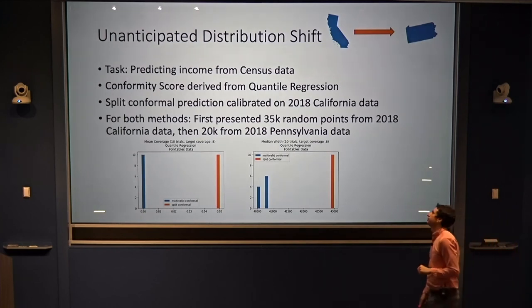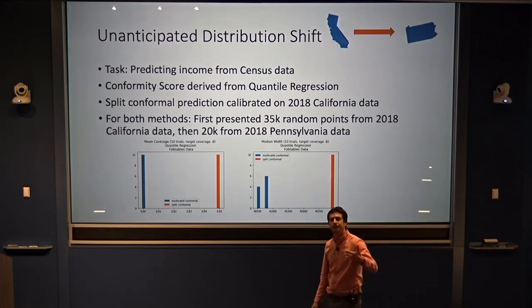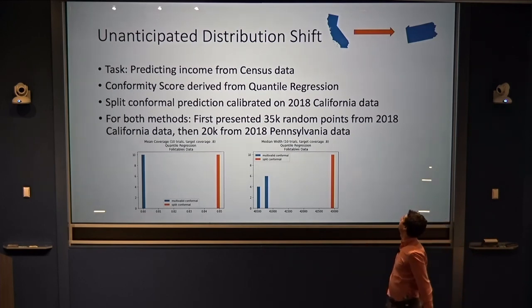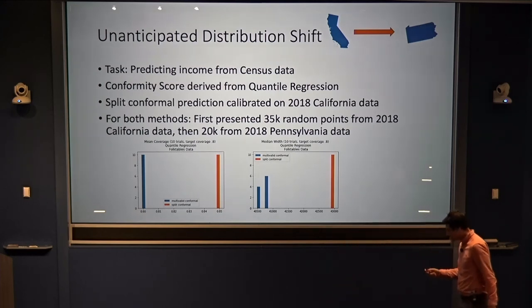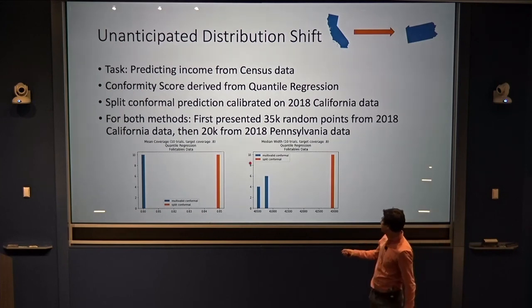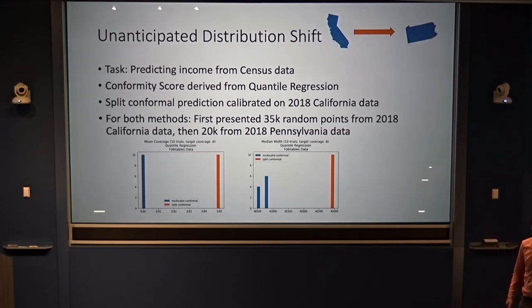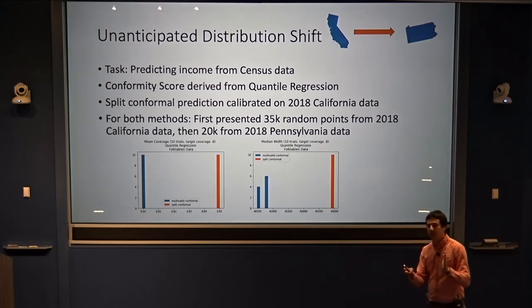How about unanticipated distribution shift? This experiment uses real census-derived income data — the regression task is predicting income from census data. Split-conformal prediction is calibrated on data from California, but then data points start coming from Pennsylvania, which is slightly different. The target coverage is 80%. The conformal prediction method doesn't get the right coverage — it overcovers. Ours gets the right coverage, and in exchange we get narrower prediction intervals, more correctly identifying the uncertainty despite the distribution shift.